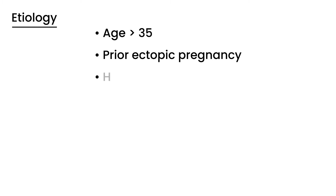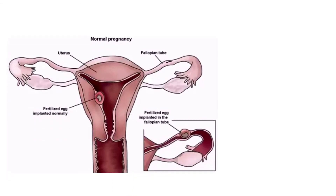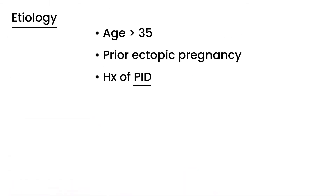Another reason is a history of pelvic inflammatory disease. When you have pelvic inflammatory disease, it can result in scar tissue forming in the fallopian tube. That scar tissue then prevents the fertilized egg from traveling down to the normal, correct location — which is why PID is a risk factor.